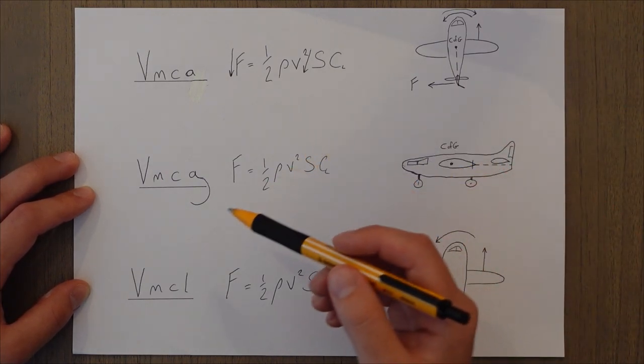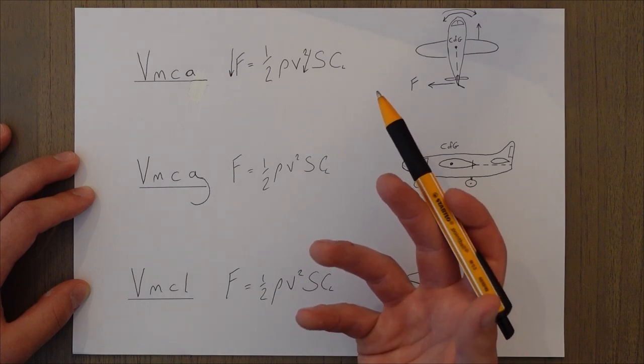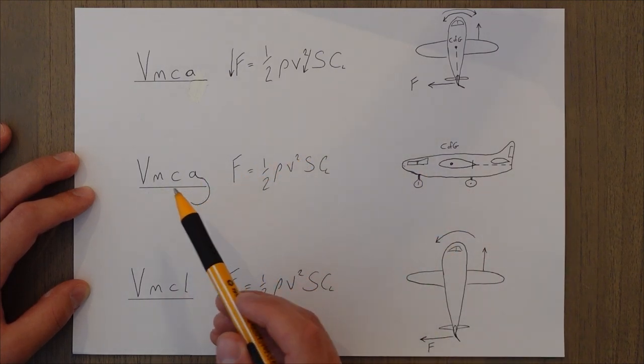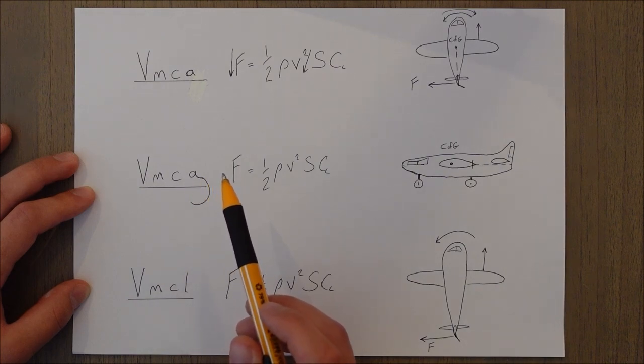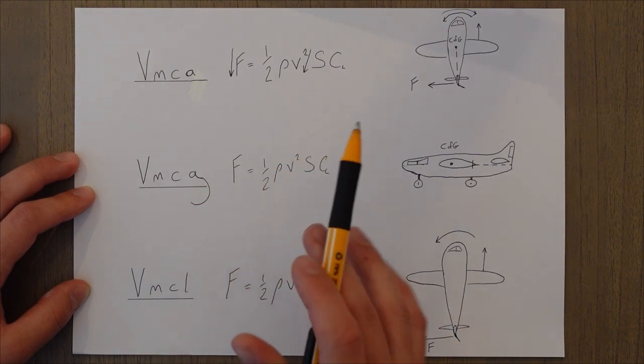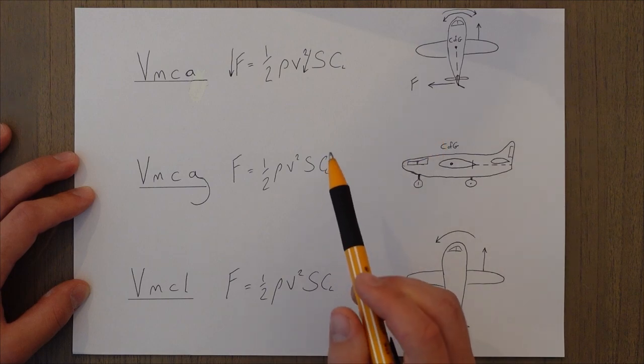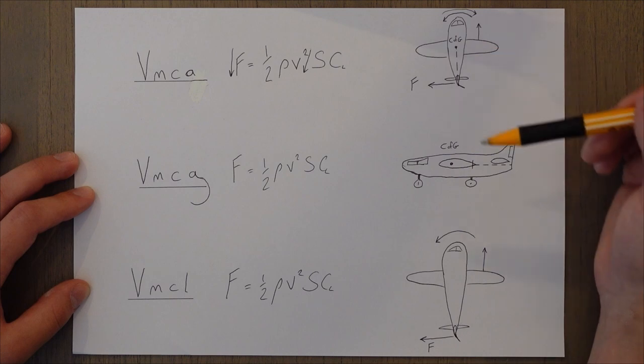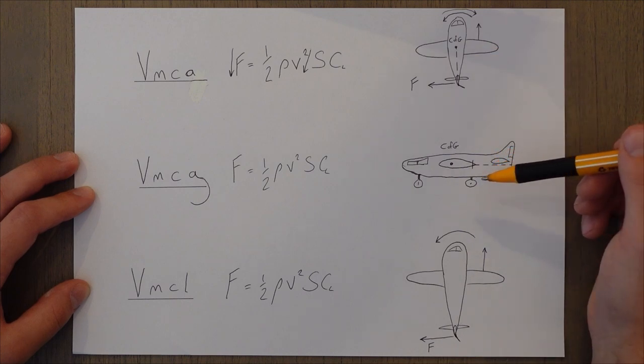Before we take off, we also have to be able to control the asymmetric yaw while on the ground. This is where we get VMCG. Speed for minimum control on the ground. It's a bit different to VMCA, but not that much. So on the ground, the yawing of the aircraft doesn't happen around the center of gravity because we have the wheels on the ground. So it happens around the wheels.